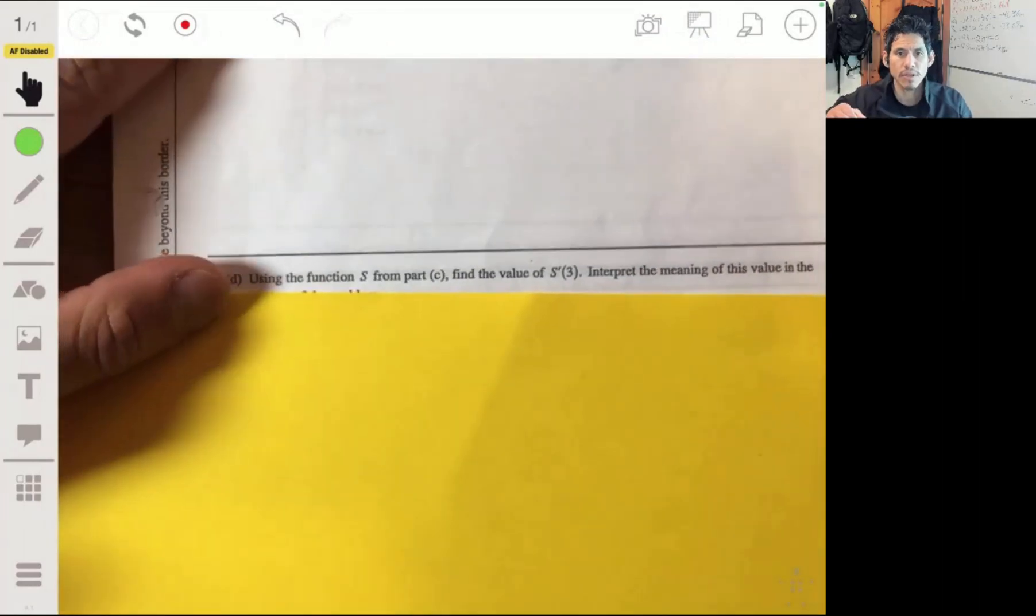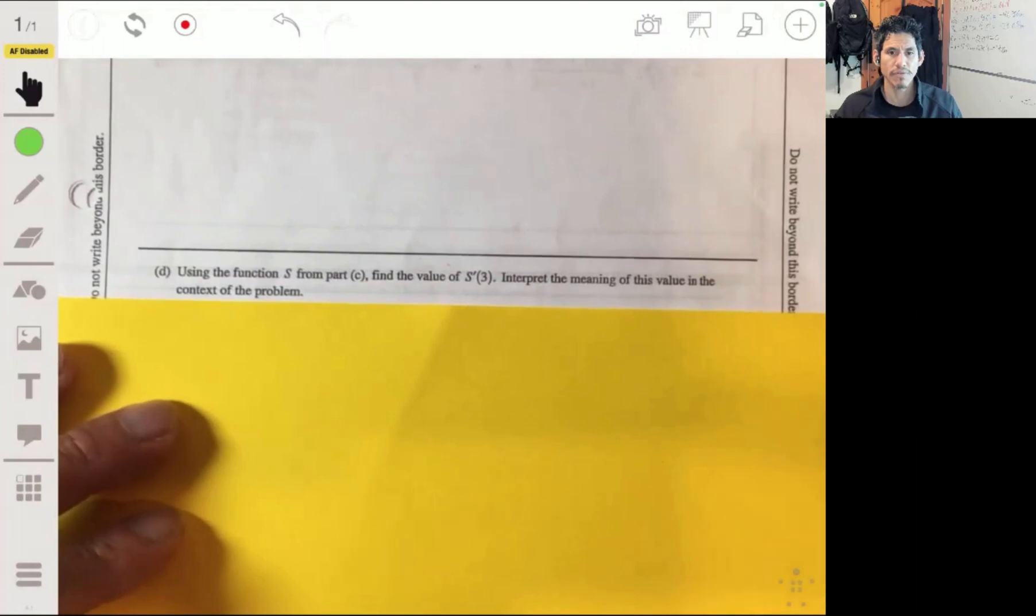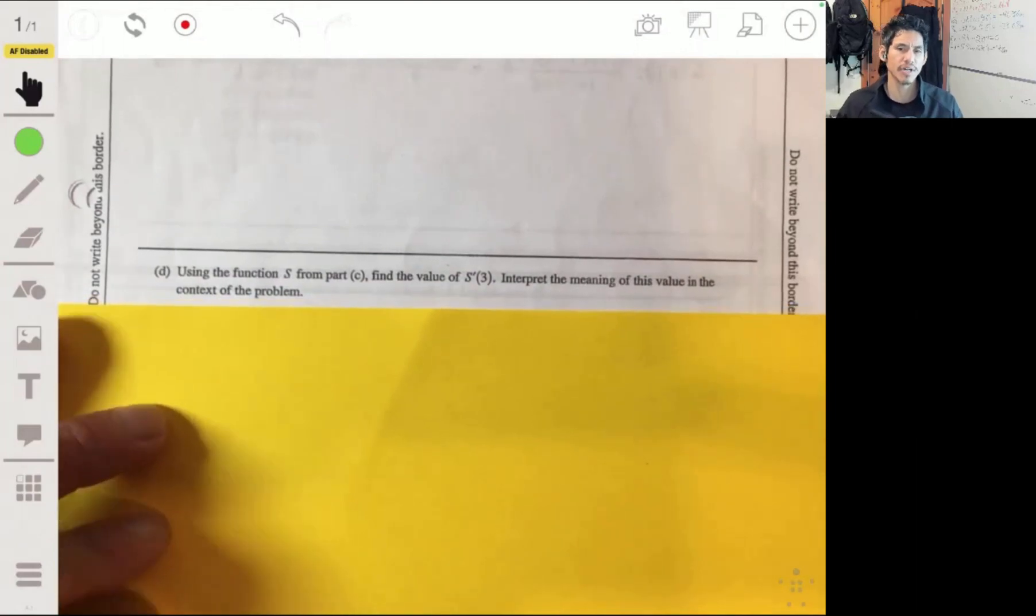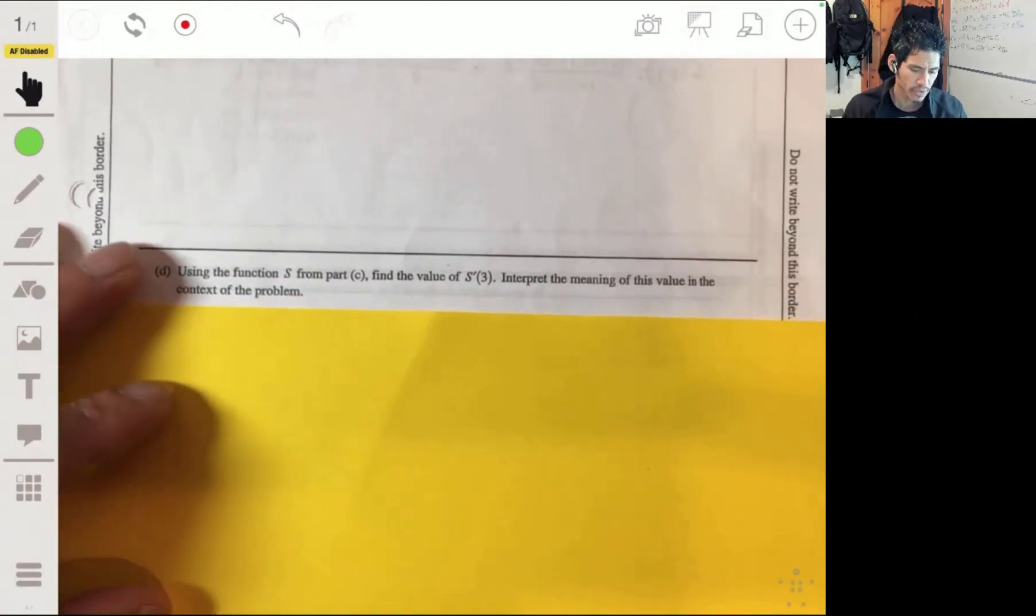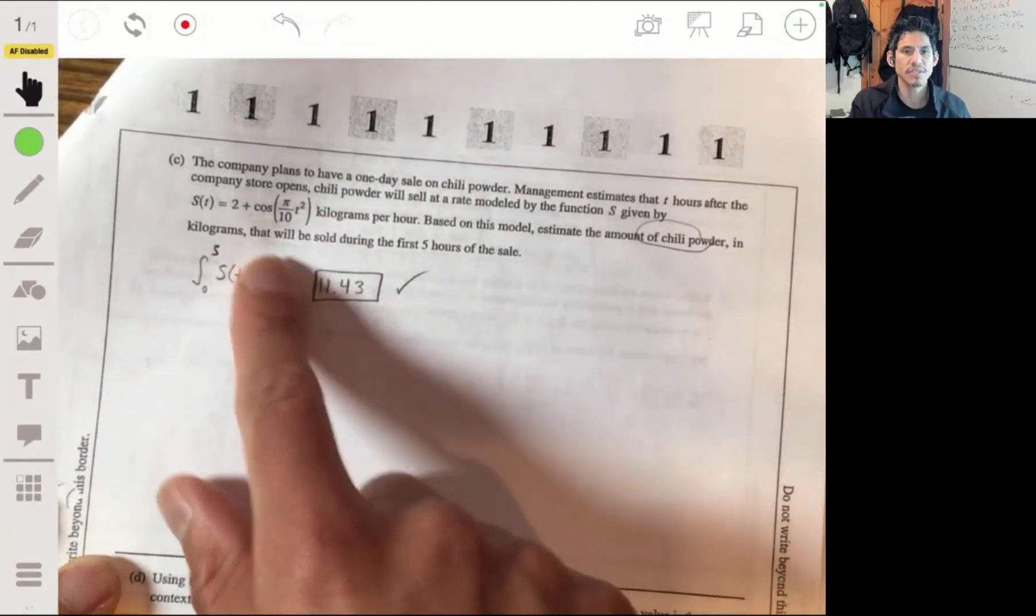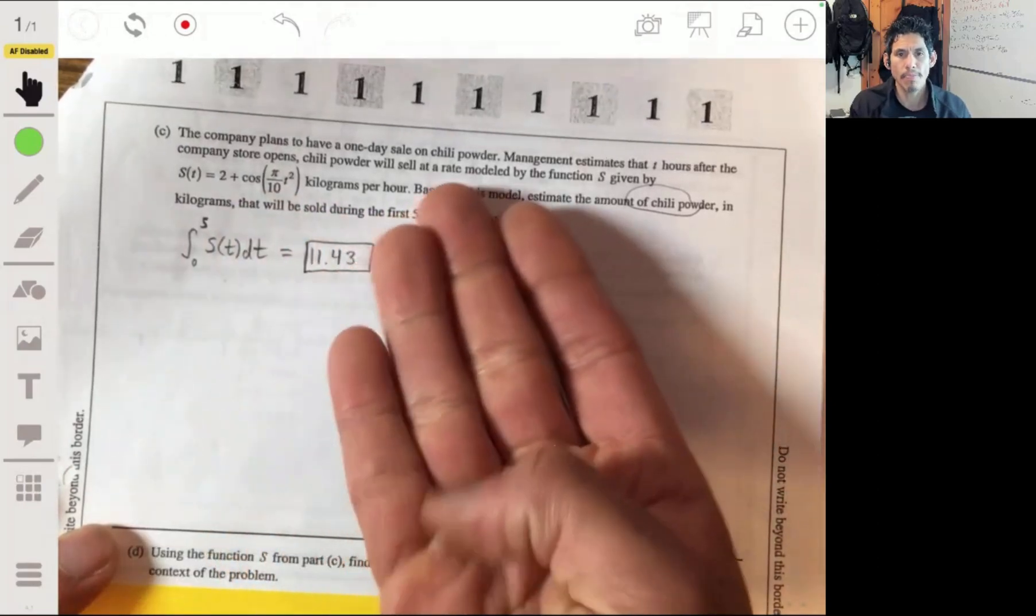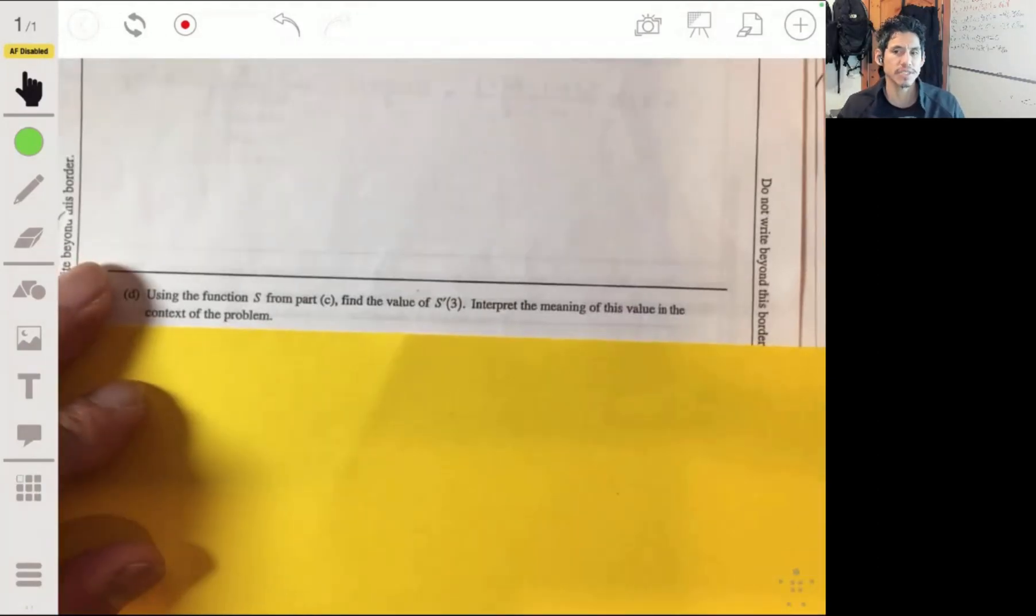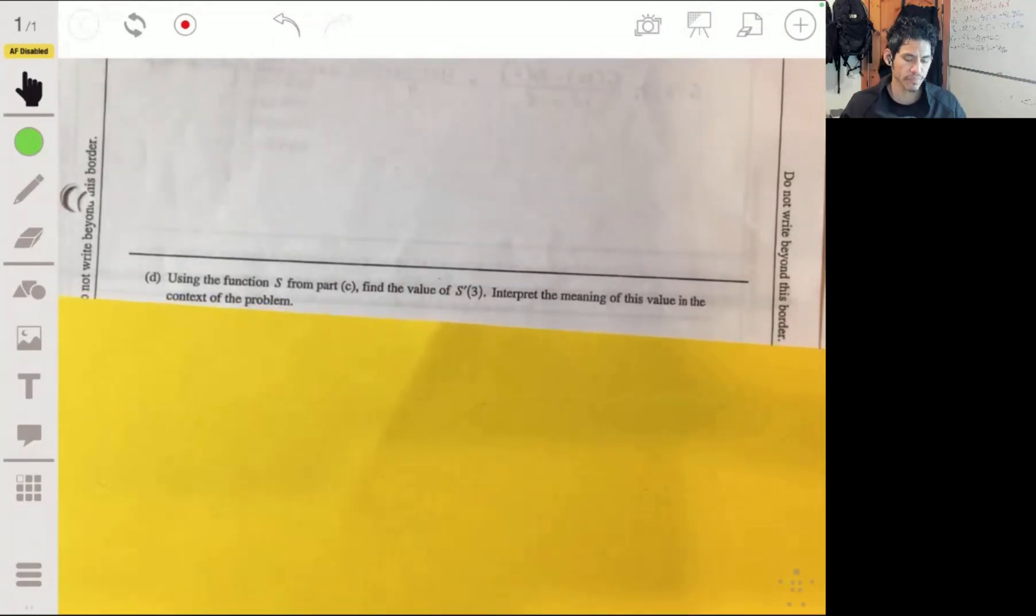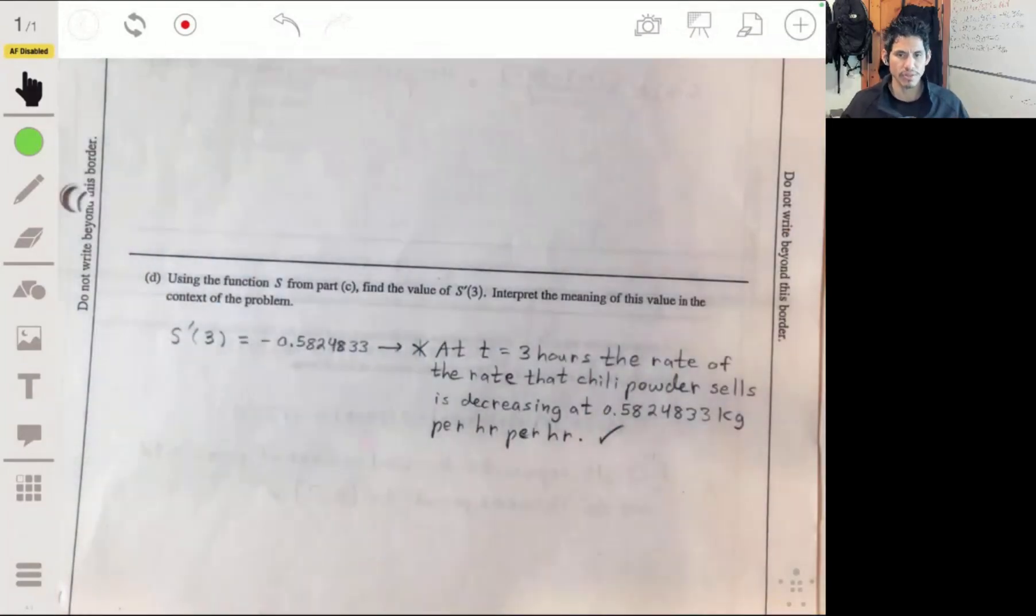And the last part: Using the function from part C, find the value of S'(3). Interpret the meaning of this value in the context of the problem. It's basically talking about the rate of change of S, the rate of change of the rate. We have the rate of the rate, because the derivative of the rate.